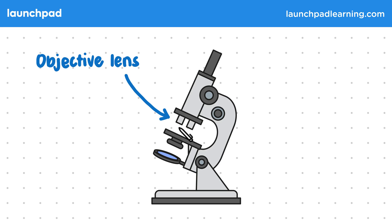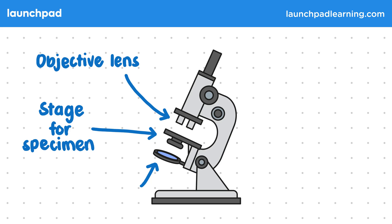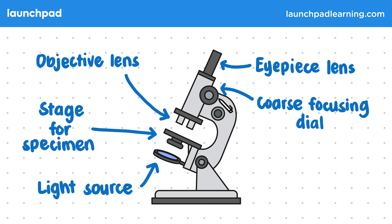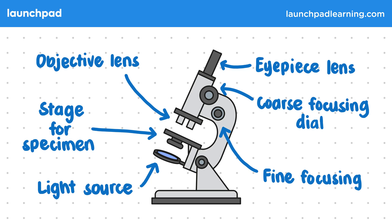Just underneath the objective lens is the stage where the specimen is placed, and underneath the stage is the light source. Going back up to the top of the microscope, this part is the eyepiece that you would look through. This large dial just below the eyepiece is the coarse focusing dial, which quickly and easily moves the stage up and down to adjust the focus as you look through the eyepiece. The smaller dial beneath this one is the fine focus, which moves the stage up and down sensitively for sharpening the focus.